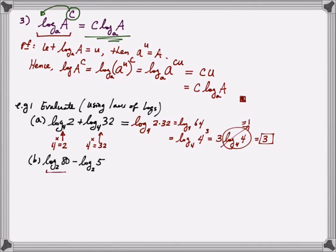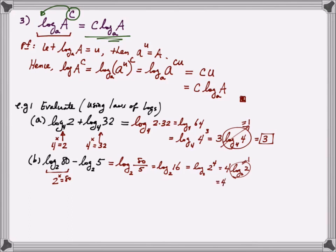For a similar reason, if you have log base 2 of 80 minus log base 2 of 5, answering 2 raised to something equals 80 is not easy. But using rule number 2, the difference of two logs combines into a log of the quotient: log base 2 of 80 divided by 5, which is log base 2 of 16. Writing 16 as 2 to the fourth power and bringing the 4 down, I have 4 times log base 2 of 2, which equals 4 times 1, giving 4 altogether.